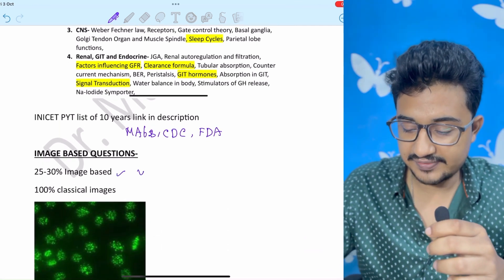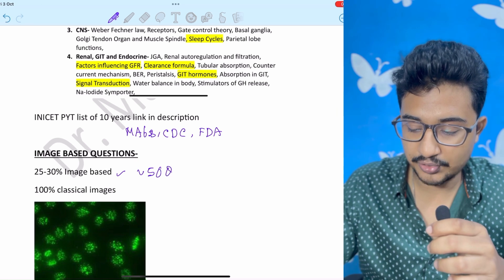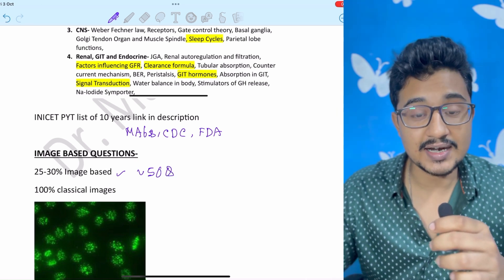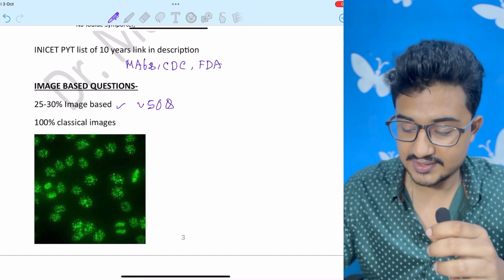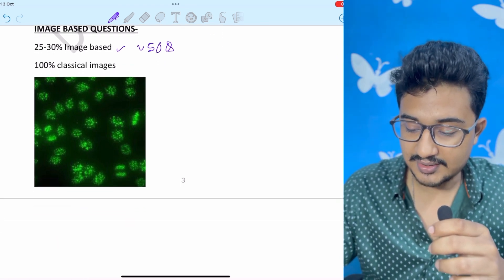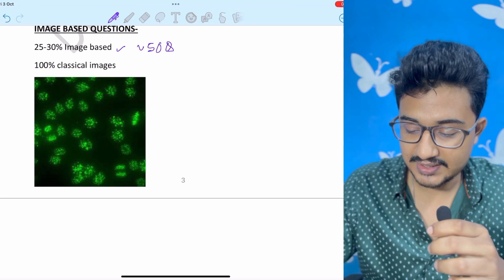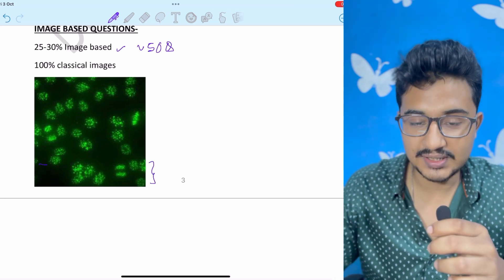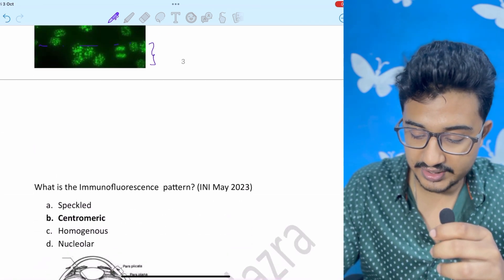Image based questions 25 to 30 percent of the questions approximately 50 questions are image based questions only. And 100 percent are classical images. Like this image was given. And in our time, INICET was probably in May. So image was half loaded. One third loaded. Up to this it was loaded.